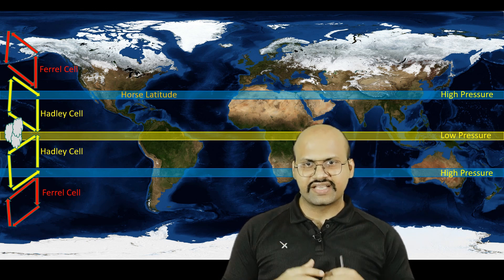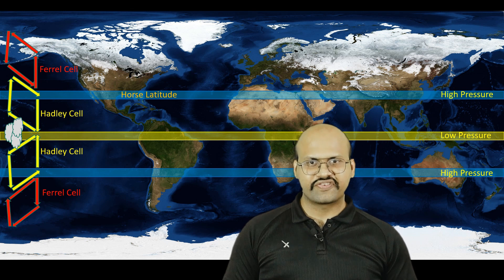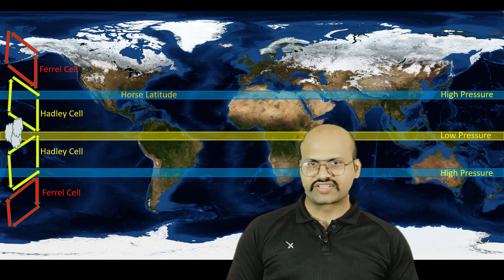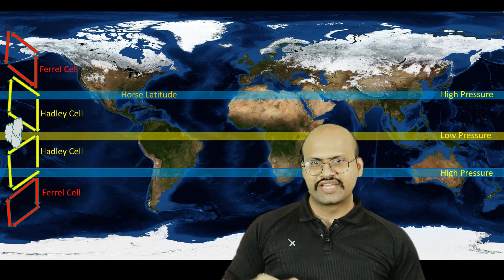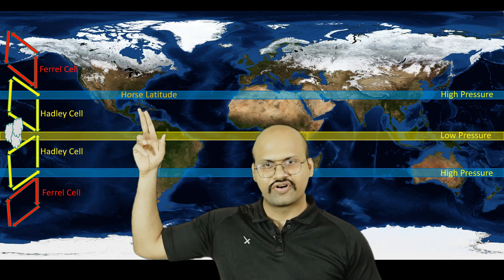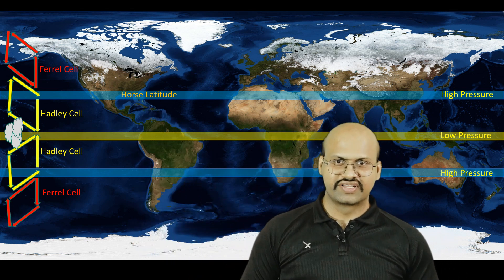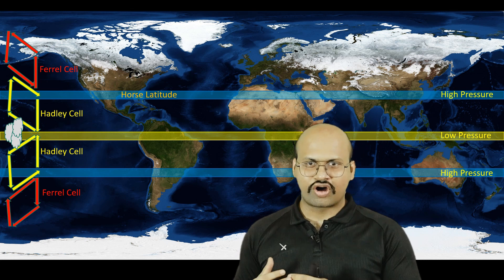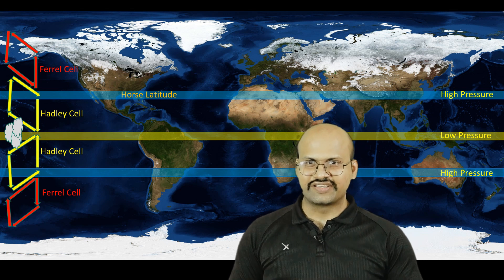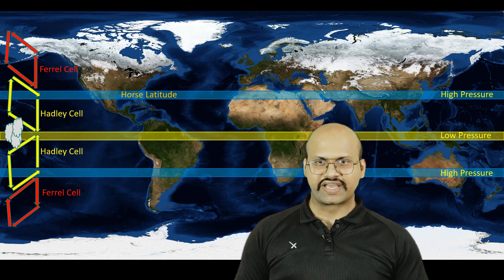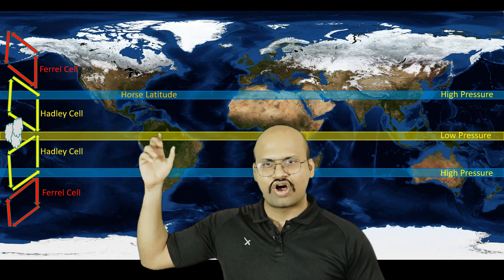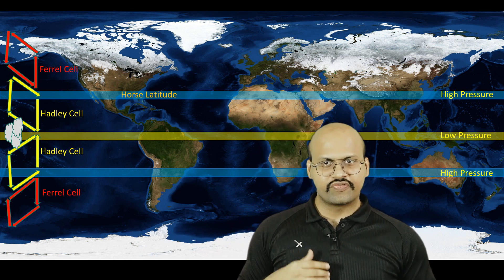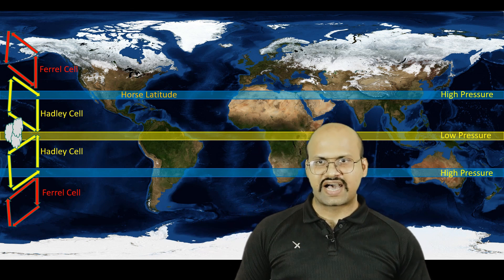Because of the descending air, surface currents are very slow or almost non-existent. In older times it was difficult for ships to maneuver, and ships had to throw horses into the sea for maneuvering — that is why this region was called horse latitudes.